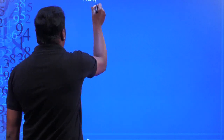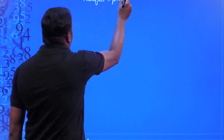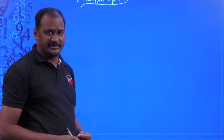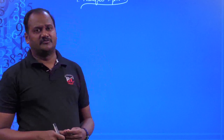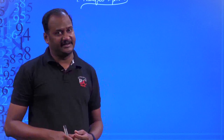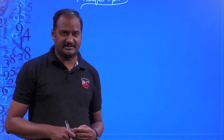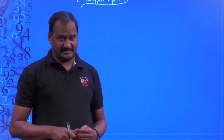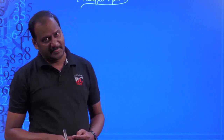Hi children, today we are going to discuss the very first chapter in our ninth class CBSE curriculum, that is Number Systems. We will look at what number systems exist in mathematics, learn briefly about rational and irrational numbers, and also discuss properties of indices, exponents, and exponential properties in this concept of number systems.